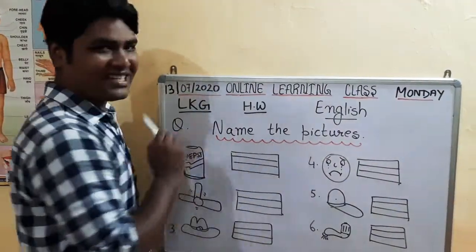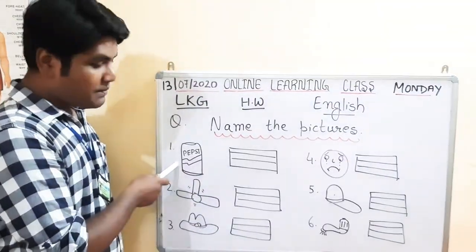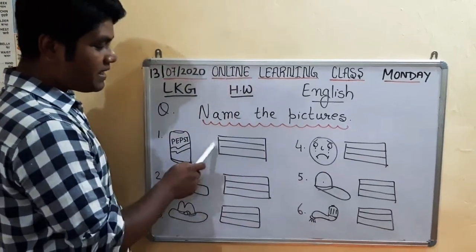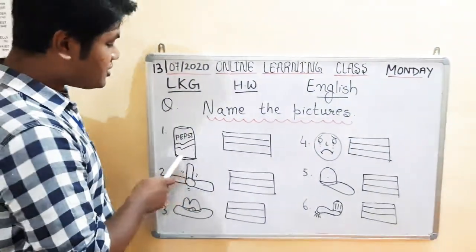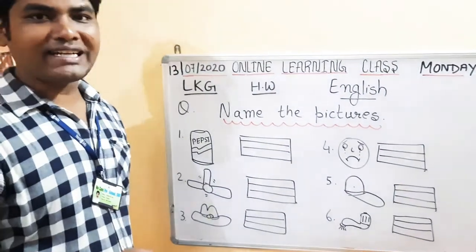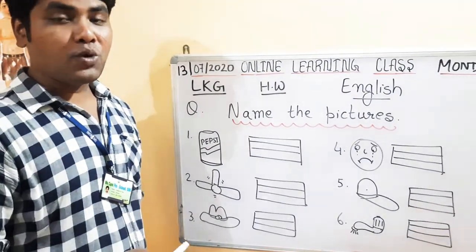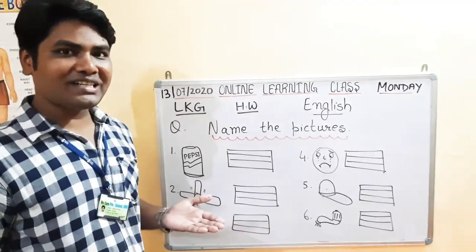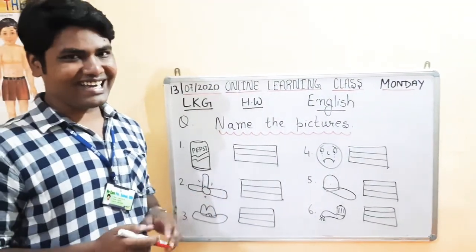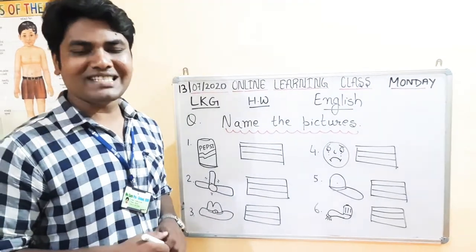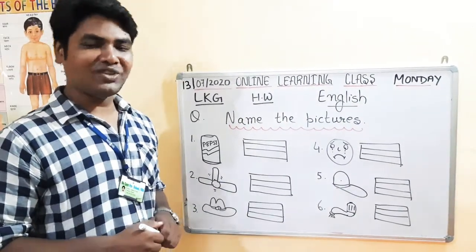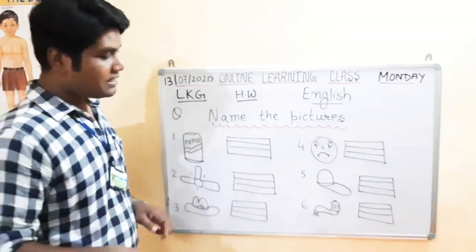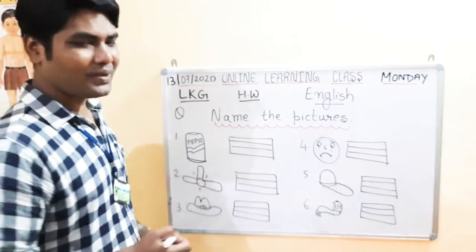Name the pictures. You can see here on the board, kids, I have made many pictures on the board. And here I have made boxes. So kids, you have to write the name of the pictures. You have read A vowel sound words, M sound words, N sound words, X sound words. You have made many sound words related to the A vowel. So now we will write the name of the pictures. I am sure that you will know all the pictures. Let's do it.